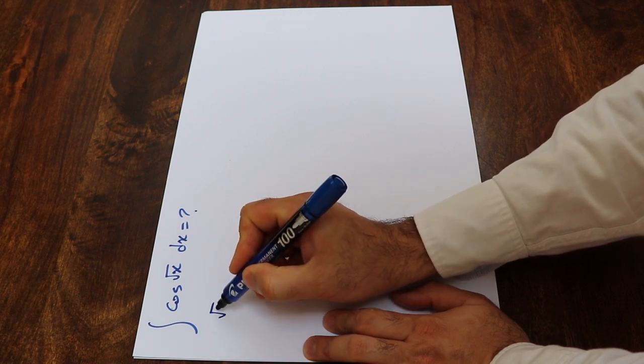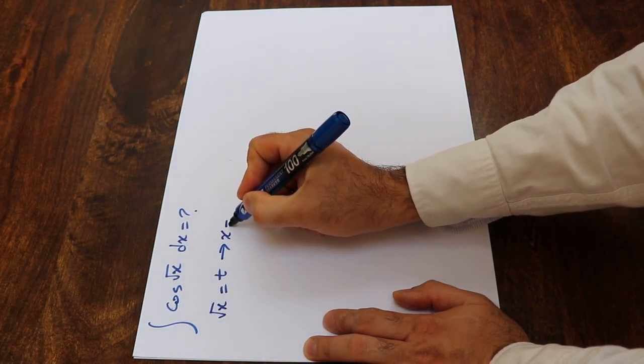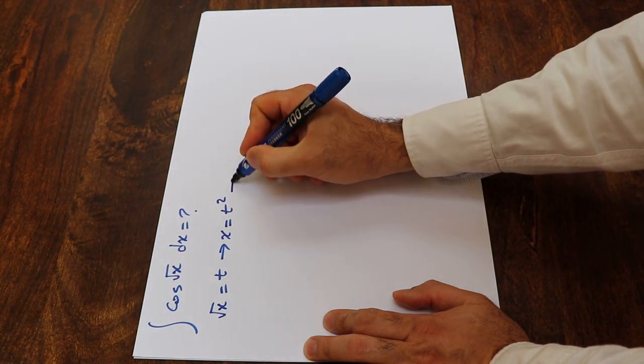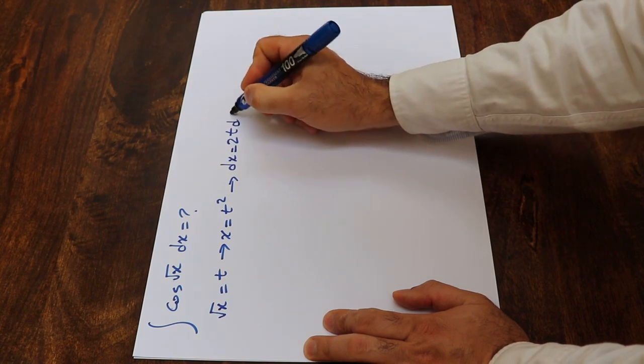So if you define square root of x as t, here you can conclude that x will be equal to t squared. So if you take the derivative from each side of this equation, you will get dx equal to 2t dt.